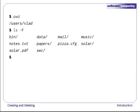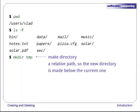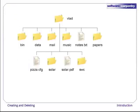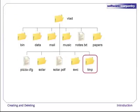Let's go back to vlad's home directory, /users/vlad. As in the previous episode, ls -f shows us the files and directories it contains, with a trailing slash after each directory to help us tell them apart. Let's create a new directory called temp with the command mkdir temp. As you might guess from its name, mkdir means make directory. Since temp is a relative path without a leading slash, the new directory is made below the current one. There's our directory — however, there's nothing below it yet. Temp is empty.